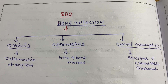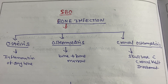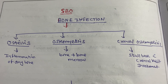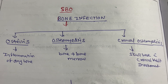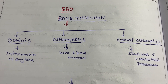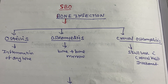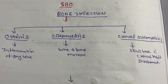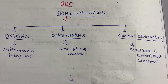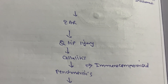Today's topic is about bone infection, or skull base osteomyelitis. Bone infection is of three types: osteitis, osteomyelitis, and cranial osteomyelitis. Osteitis is infection of bone only, osteomyelitis is bone plus bone marrow infection, and cranial osteomyelitis involves skull base involvement.